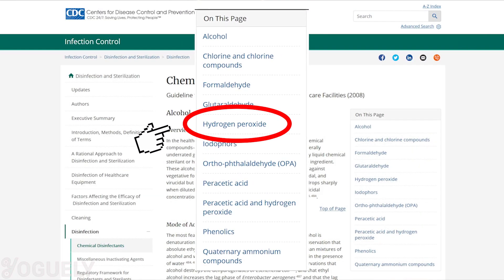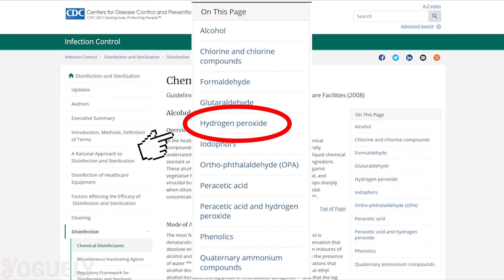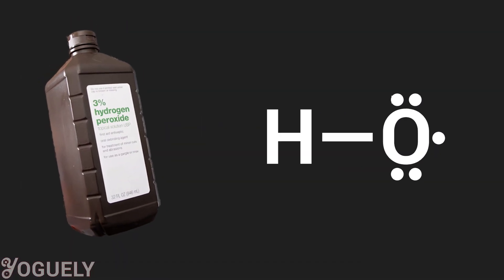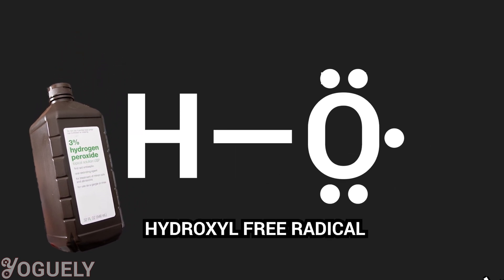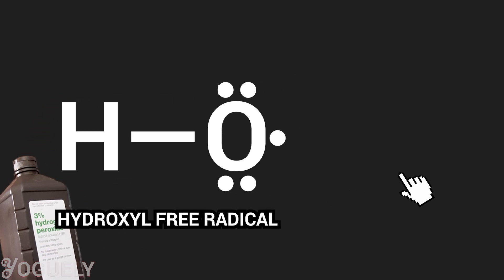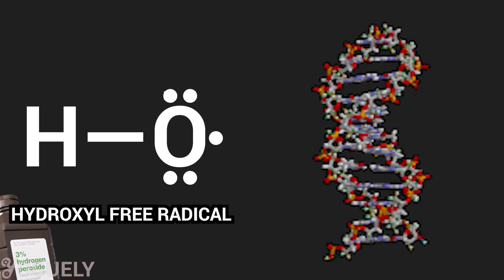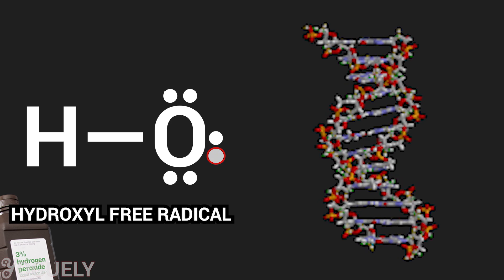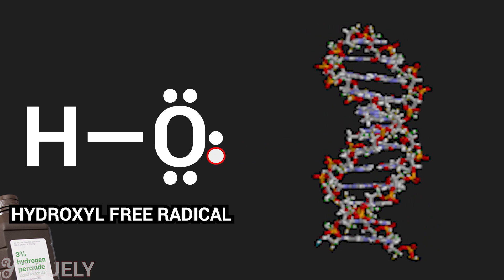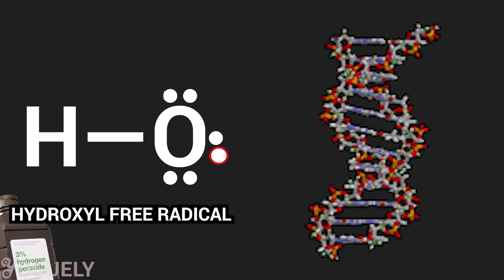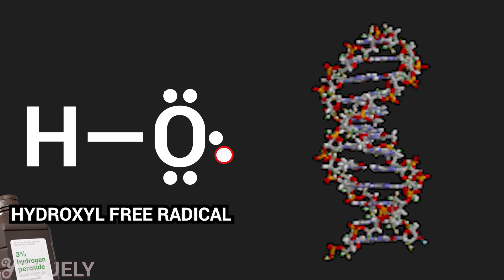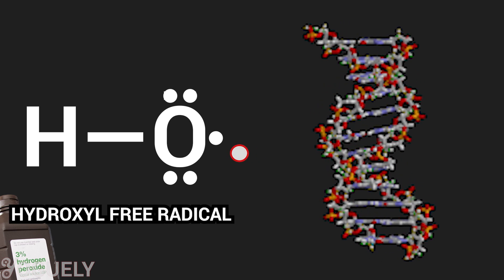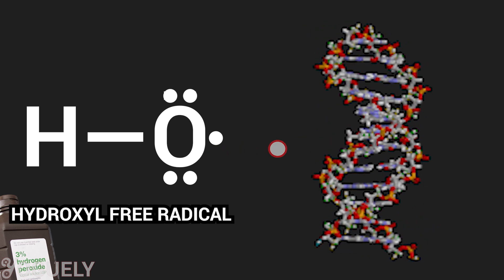Is hydrogen peroxide a disinfectant? According to the CDC and the EPA, hydrogen peroxide is considered a disinfectant. It works as a disinfectant by producing hydroxyl free radicals. Free radicals are atoms, molecules, or ions that have an unpaired balanced electron. Because free radicals are missing an electron, they really want to steal an electron and fill that void, which makes them highly reactive. These hydroxyl radicals can attack and destroy membrane lipids, DNA, and other essential cell components, meaning hydrogen peroxide disinfects by destroying or inactivating microbes.